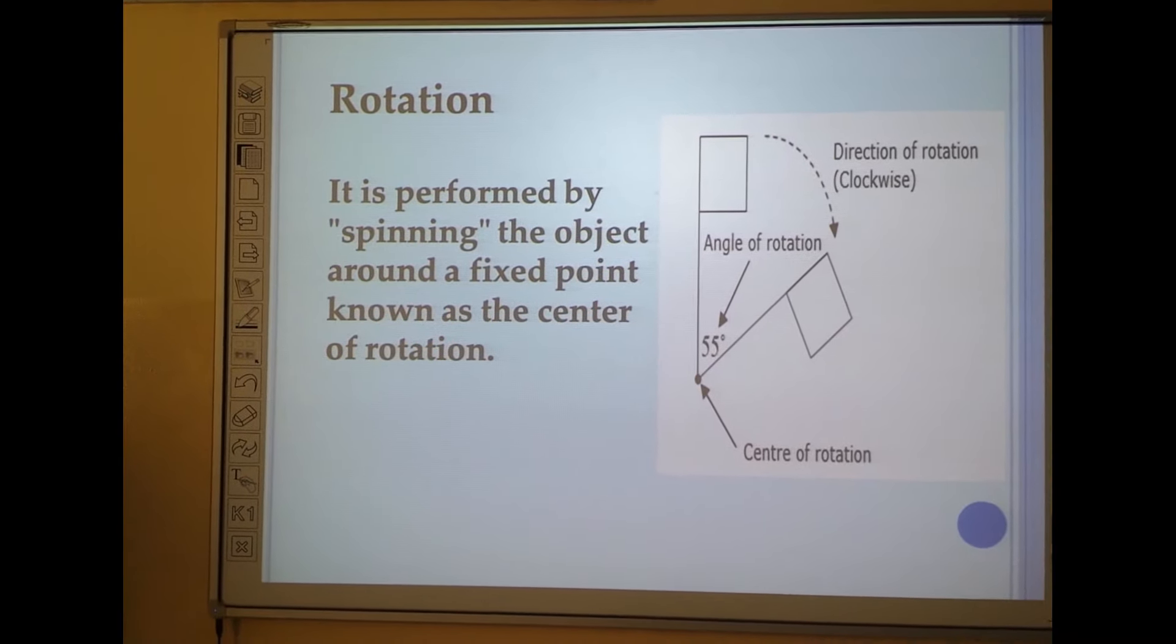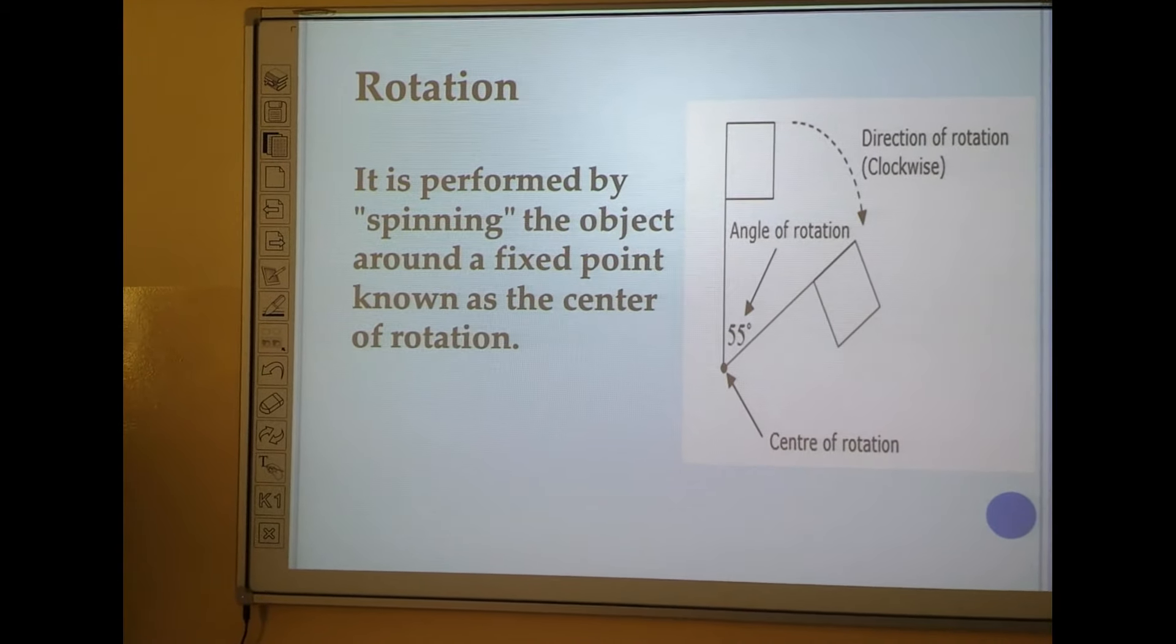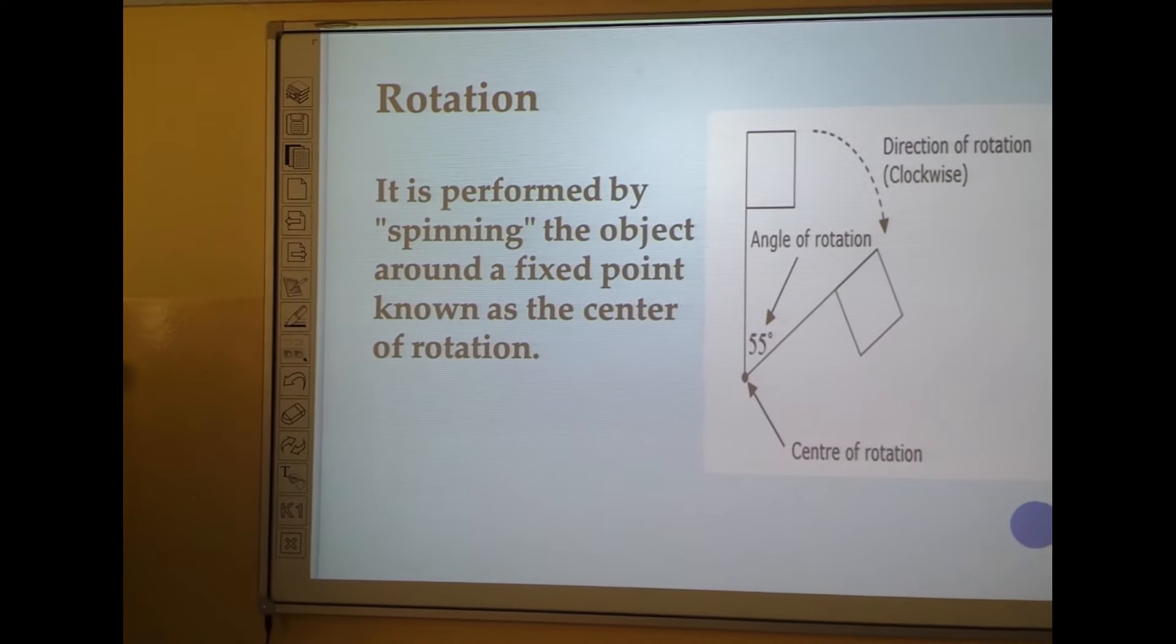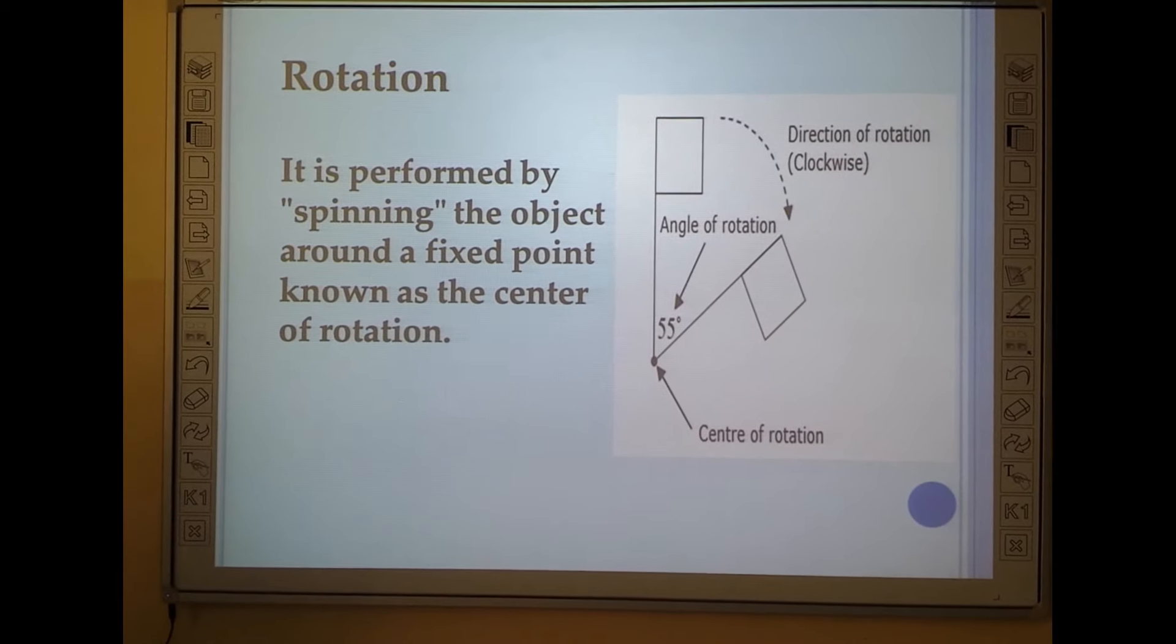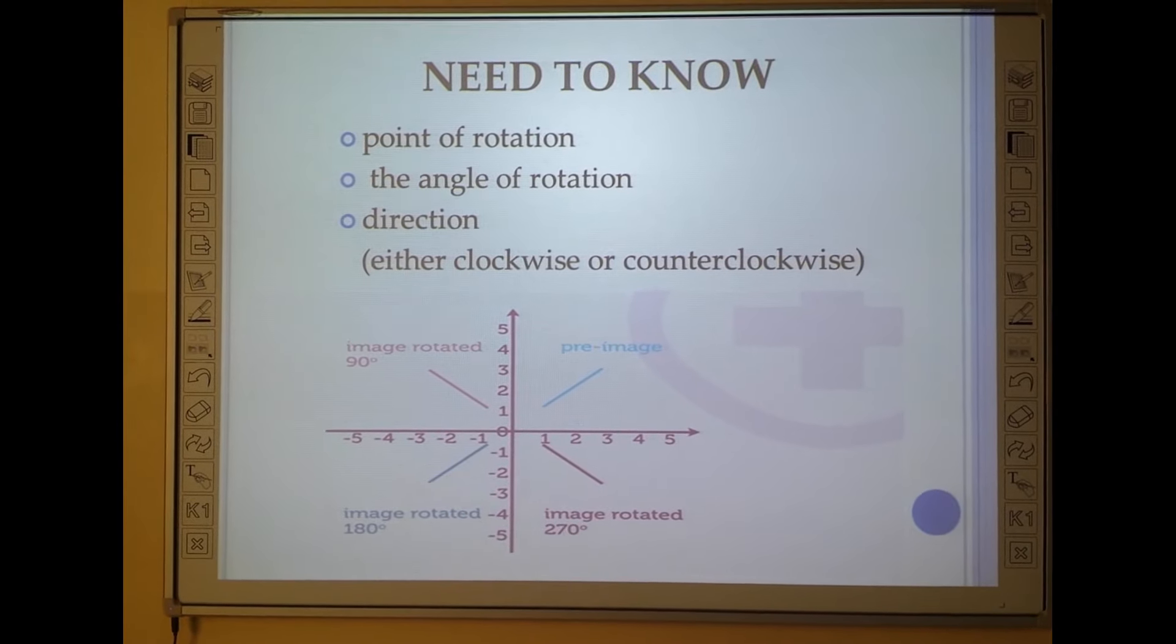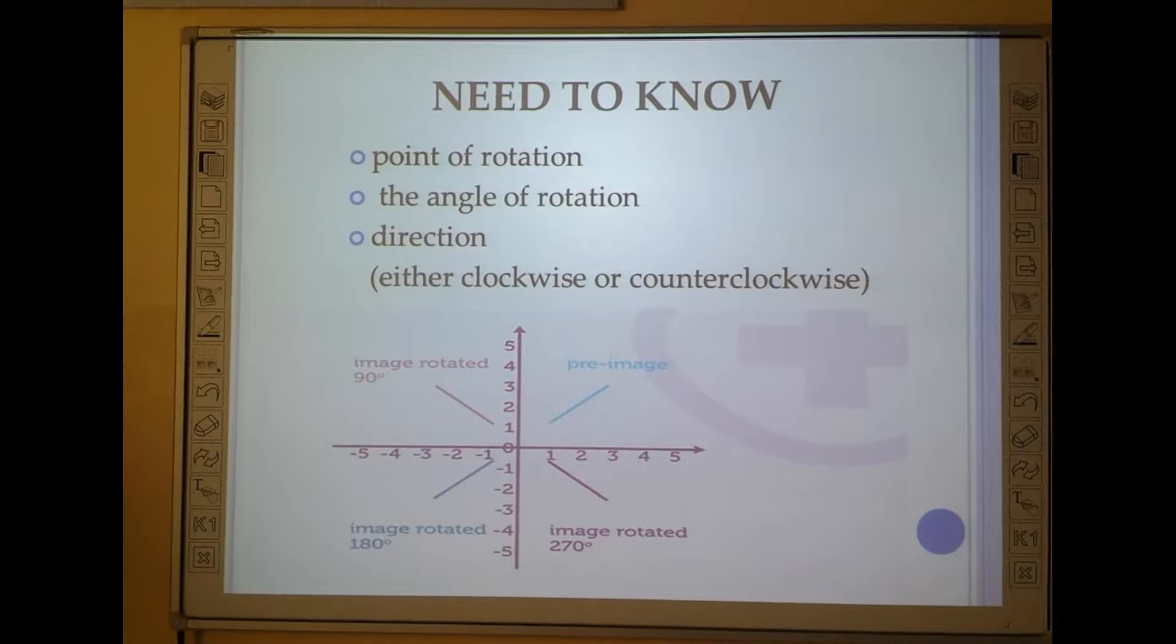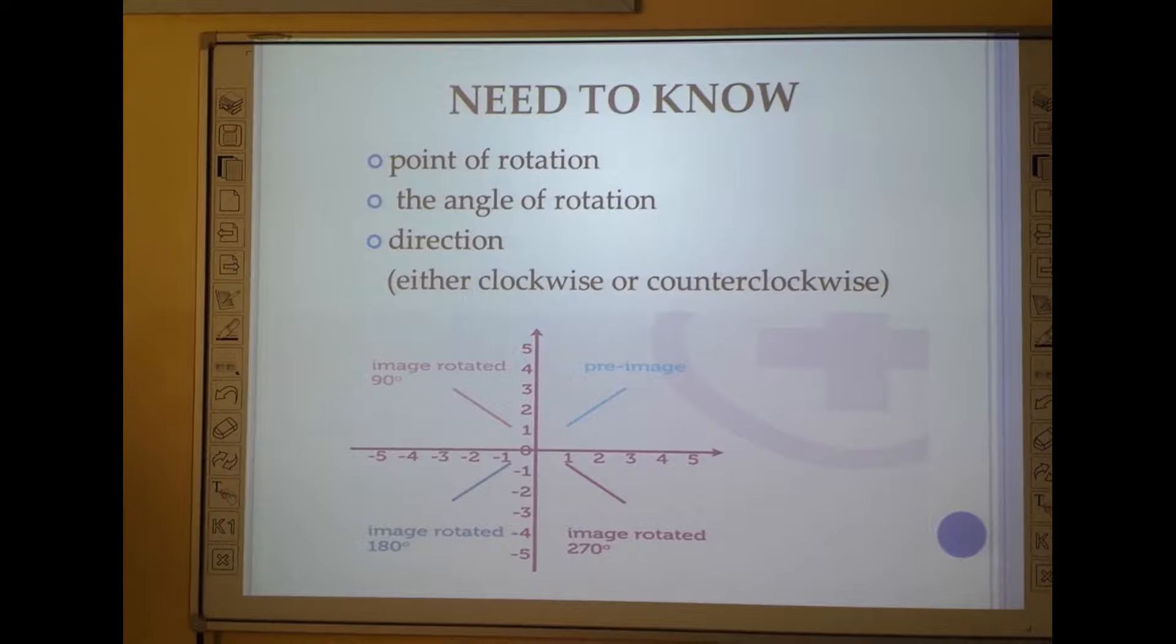The second we are discussing here is rotation. It is performed by spinning the object around a fixed point known as the center of rotation. You may observe in the right side figure that a flag is available, an angle of reflection is 55 degrees, and the direction of rotation is clockwise. The three main features are required for rotation: point of rotation, you must know on which point or axis you are rotating your object, the angle of rotation, and the direction, either clockwise or counterclockwise.